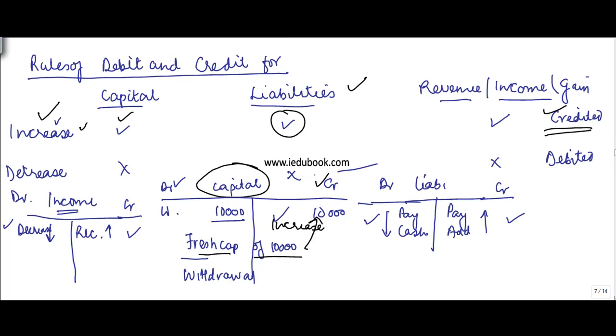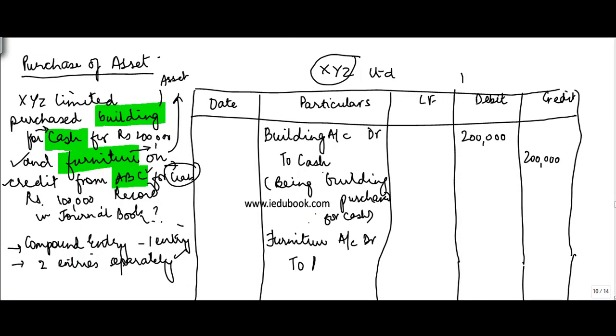So I credit ABC. I put in 100,000 here. And you can put in the narration being furniture purchased on credit from ABC. Right, so these are the two kinds of entries that can happen for purchase of an asset. Now this asset could be anything else. I mean, if instead of building you had, let's say, land, you would write land account debit to cash, or whatever that might be.